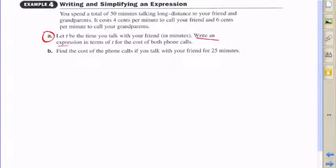Let's say that you spend a total of 50 minutes talking long distance to your friend and grandparents. It costs four cents per minute to call your friend and six cents per minute to call your grandparents. Part a: Let t be the time you talk with your friend in minutes and write an expression in terms of t for the cost of both phone calls.